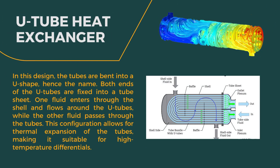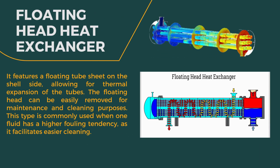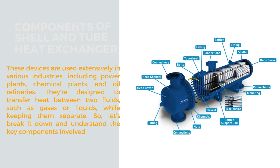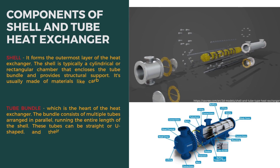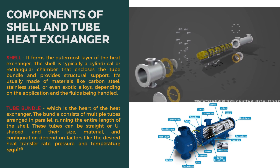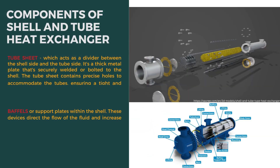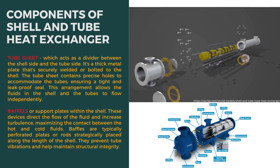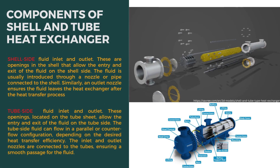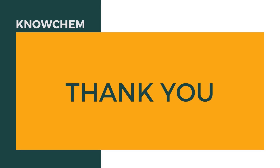The three types are the fixed tube sheet, U-tube, and floating head — each with unique features and applications. In terms of components, we explored the shell, which forms the outer layer and provides structural support. Inside we have the tube bundle consisting of multiple tubes in parallel. The tube sheet acts as a divider ensuring a tight seal. Baffles enhance heat transfer by directing fluid flow and increasing turbulence. The shell and tube sides each have fluid inlet and outlet openings, and understanding these components helps in comprehending the configuration and purpose of shell and tube heat exchangers.